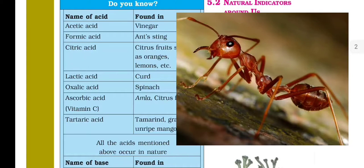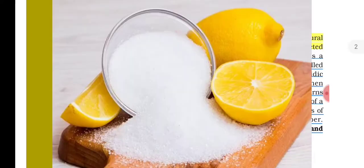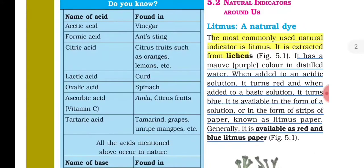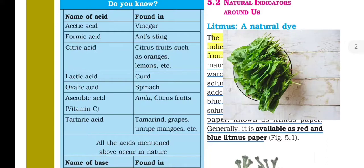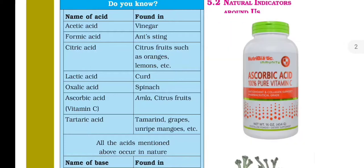The irritation from an ant bite is caused by formic acid. Citric acid is found in citrus fruits such as oranges and lemons. Lactic acid is present in curd (dahi). Oxalic acid is found in spinach and tomato. Ascorbic acid — also known as Vitamin C — is found in amla and other citrus foods.